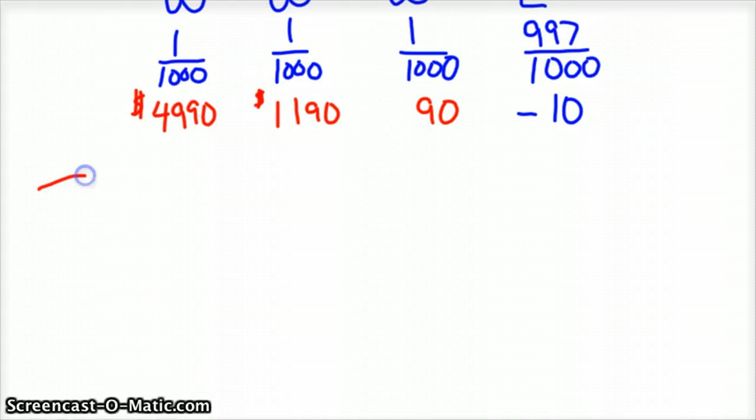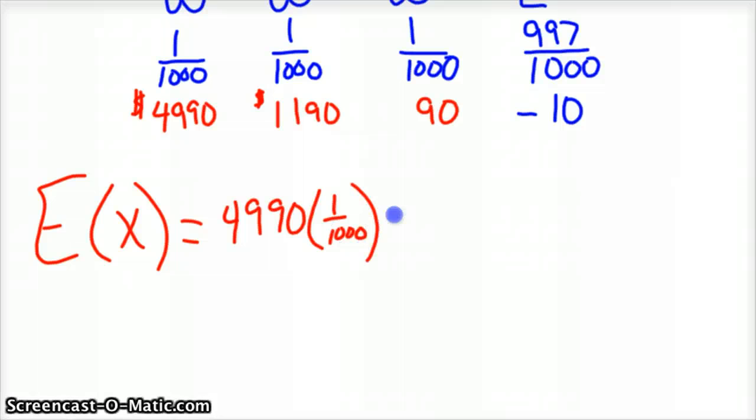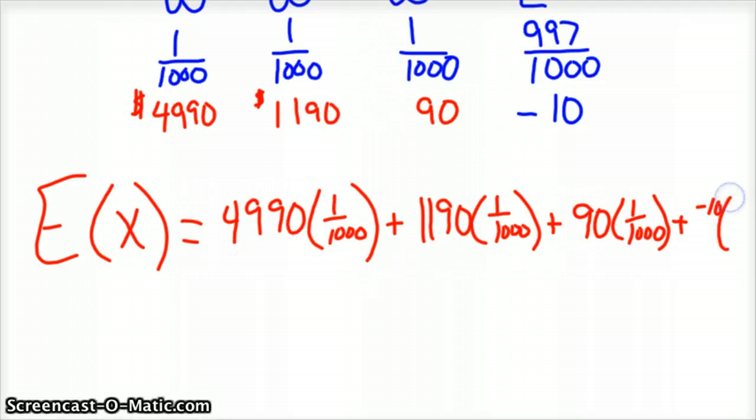Again, we're just going to do the mean, which we'll call expected value. It would be $4,990 times 1 over 1,000, plus $1,190 times 1 over 1,000, plus $90 times 1 over 1,000, minus $10, or plus a negative $10, times 997 over 1,000. So you do the math for that.